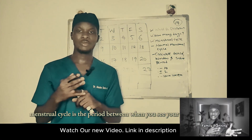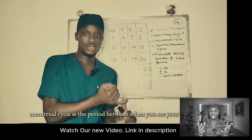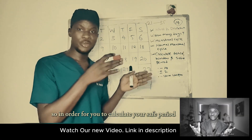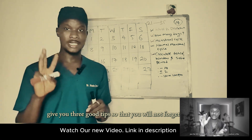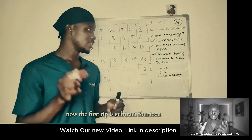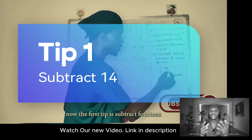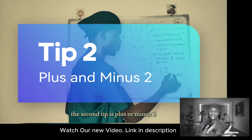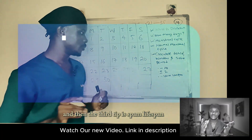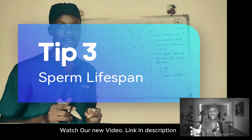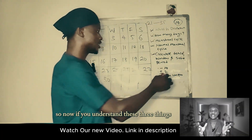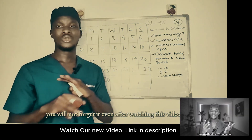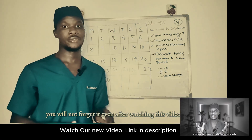The menstrual cycle is the period between when you see your period and the next period. In order for you to calculate your safe period, I'm going to give you three tips so that you will not forget. The first tip is: subtract 14. The second tip is: plus or minus two. And the third tip is: sperm lifespan. If you hold these three things in your mind, you will not forget.